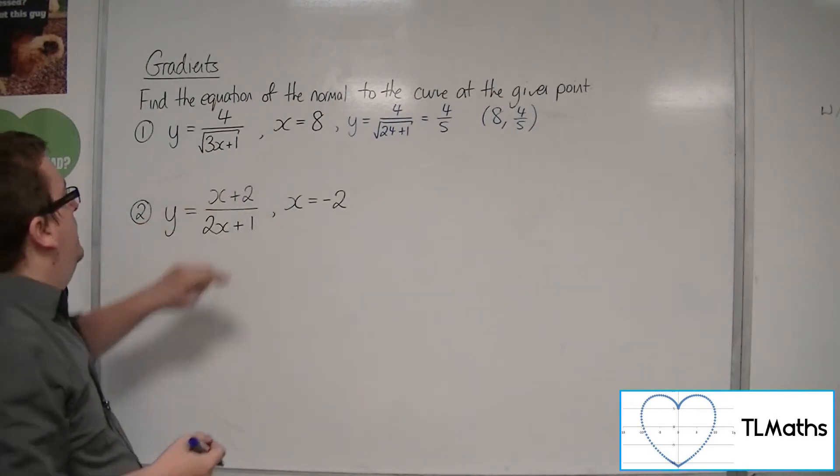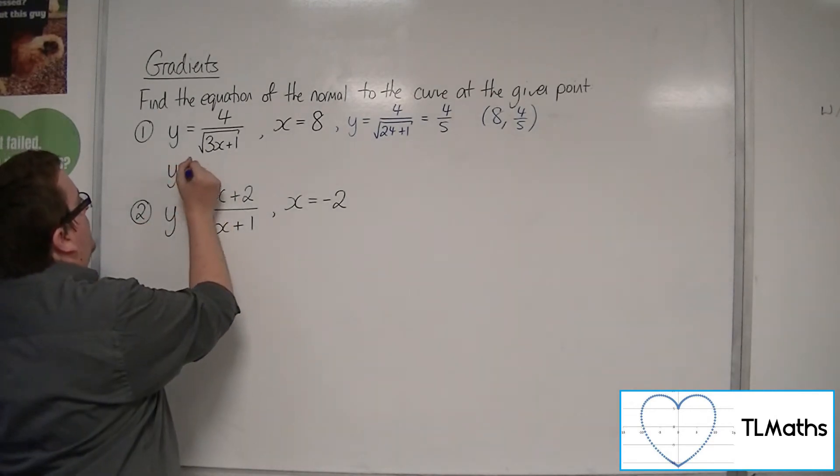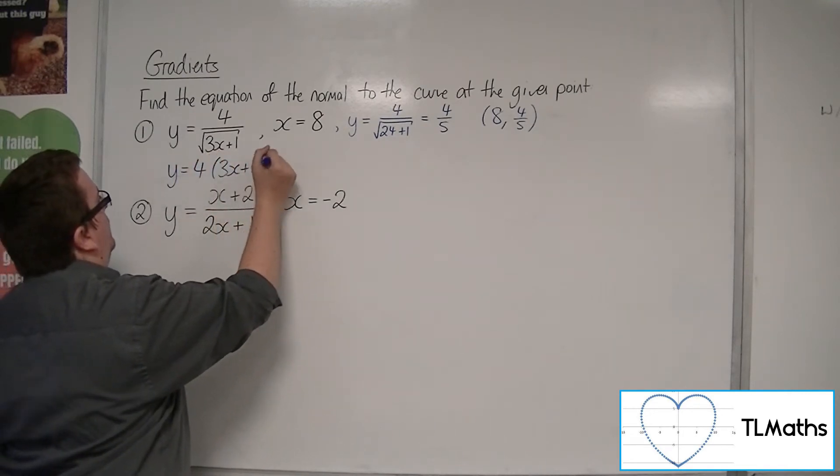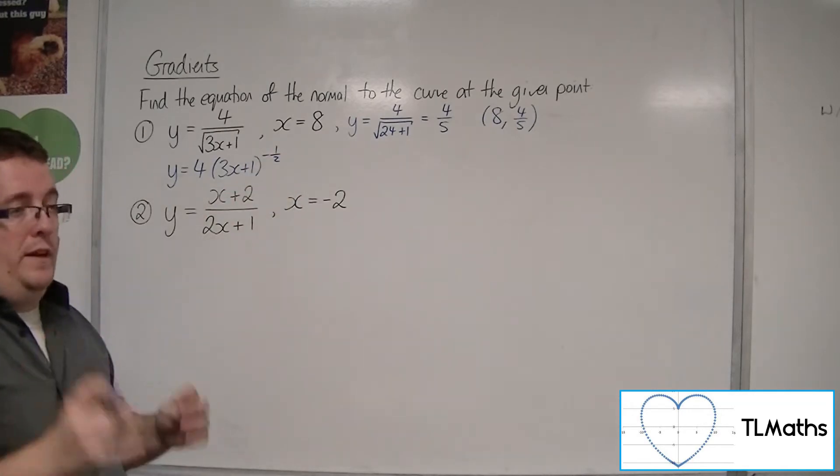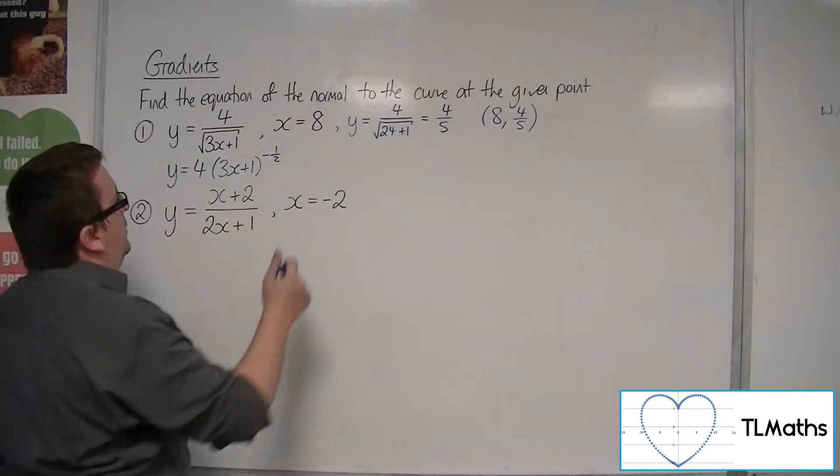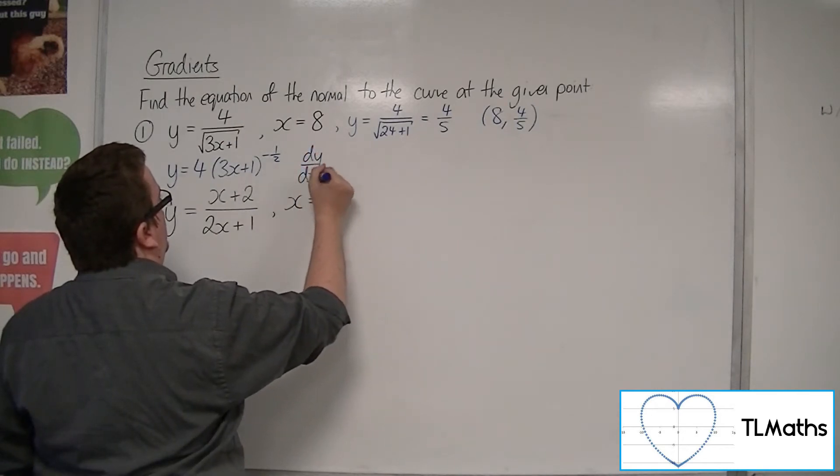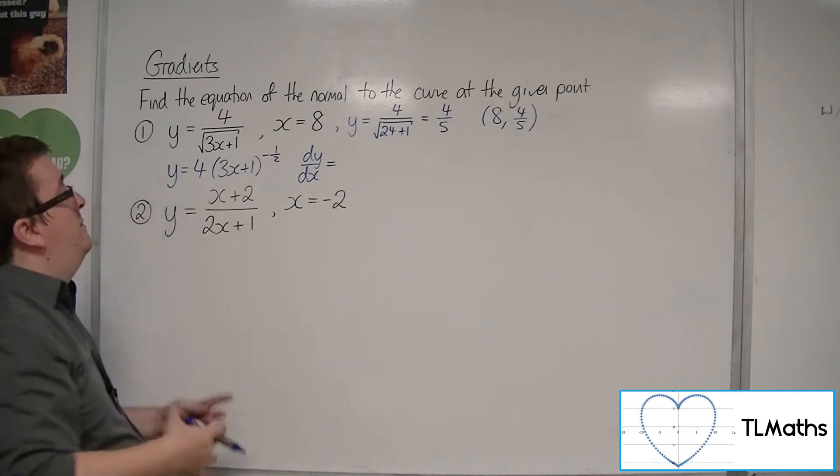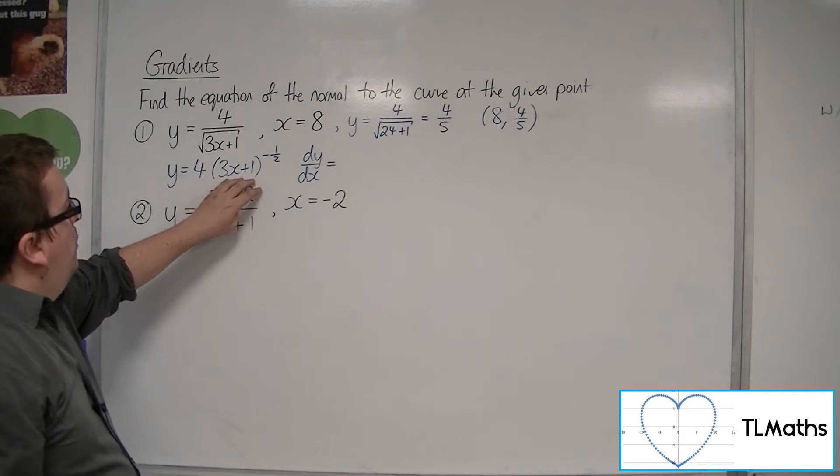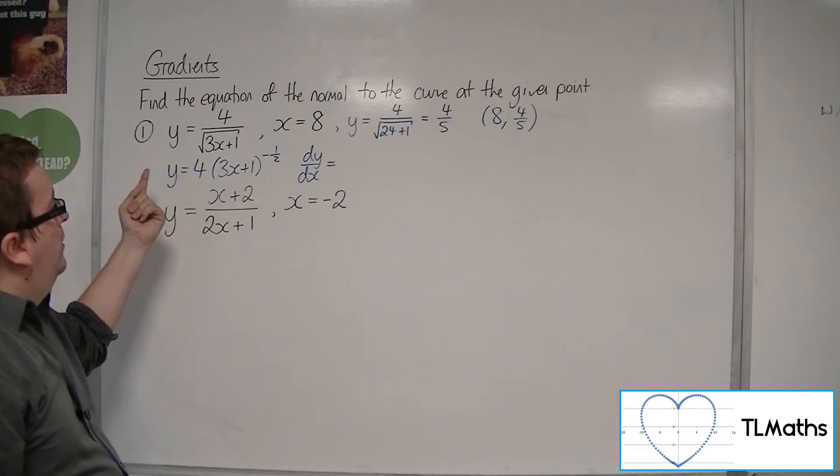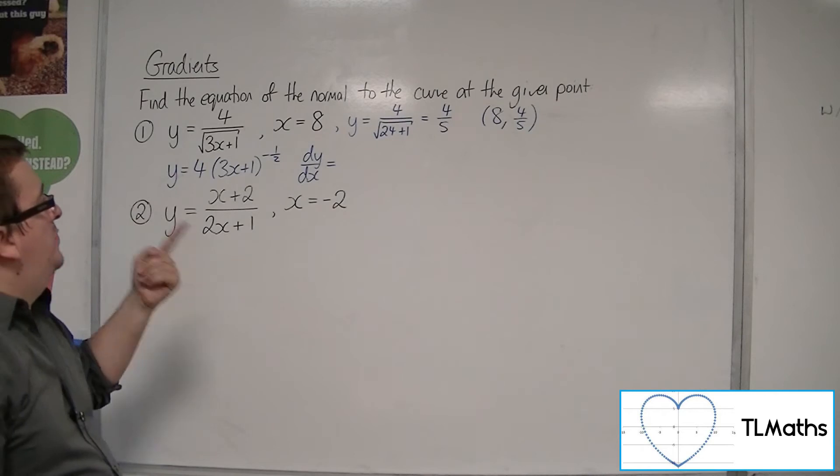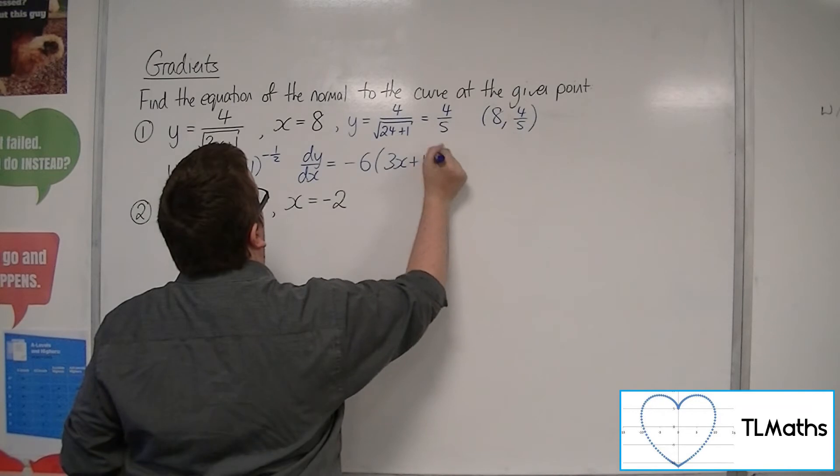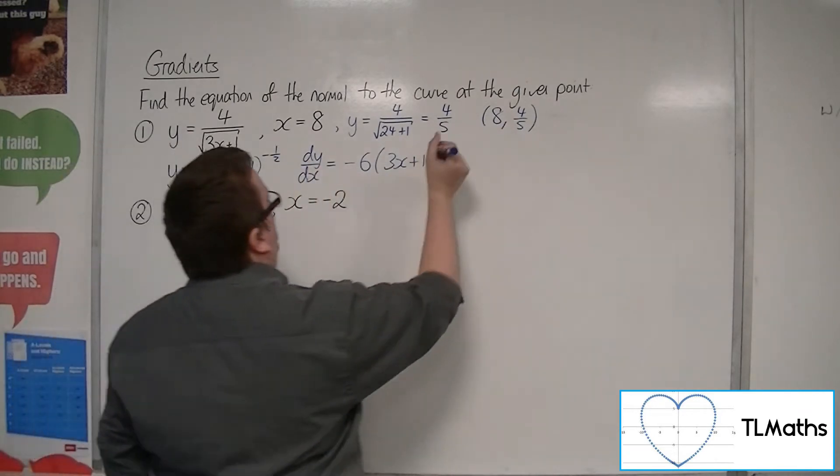So now I want to differentiate this. So I'm going to rewrite it as 4 lots of (3x + 1) to the minus 1/2. So then dy/dx, the minus 1/2 will come down to the front, multiply with the 4, that will give me minus 2. The derivative of what's inside will come outside as well, so that's a 3. So I've got minus 2 times 3, so minus 6, (3x + 1), and then take 1 off the power, so minus 3/2.